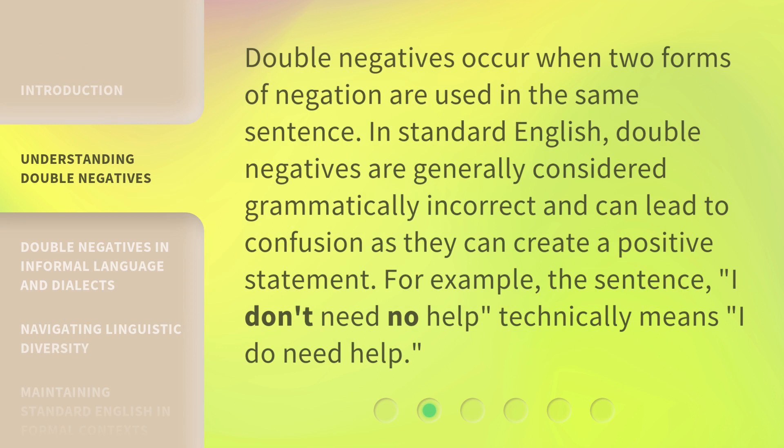Double negatives occur when two forms of negation are used in the same sentence. In standard English, double negatives are generally considered grammatically incorrect and can lead to confusion, as they can create a positive statement. For example, the sentence 'I don't need no help' technically means 'I do need help.'